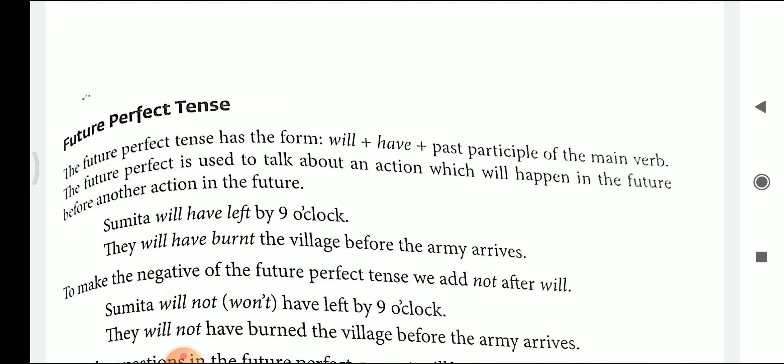The future perfect tense has the form: will plus have plus past participle of the main verb. The future perfect tense is used to talk about an action which will happen in the future before any other action in the future. In simple words, future perfect tense is a tense which is used to talk about an action which will happen in the future but before any other action takes place in the future.